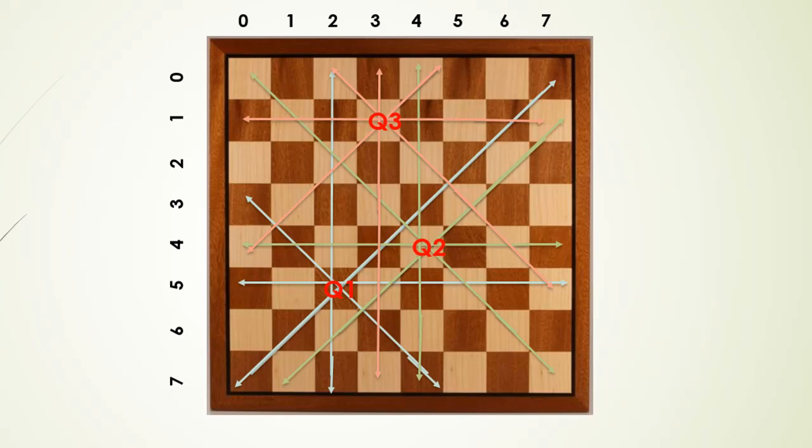So for example if we position queen 1 here, and the second one here, you can see that they do not attack. Now, the third queen could be positioned here, and now any of the three queens are attacking.